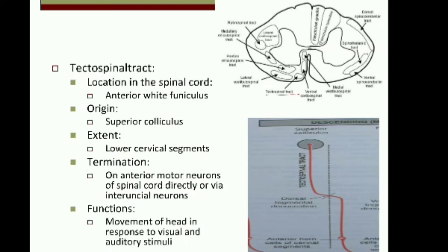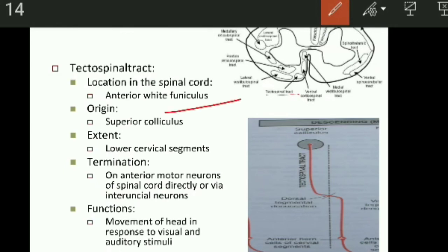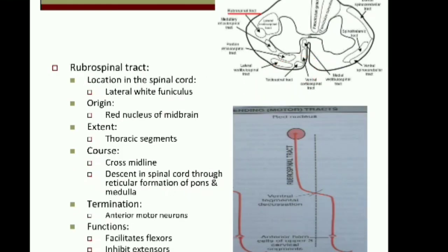The tectospinal tract: you can see here its location in the spinal cord — it is located in the anterior white funiculus. The tract fibers originate from the superior colliculus of the midbrain, and these fibers extend up to the lower cervical segments. After origin from the superior colliculus, the tract fibers cross the midline in the dorsal tegmental decussation and pass through the anterior column. Fibers terminate on the anterior motor neurons of the spinal cord either directly or via interneurons.